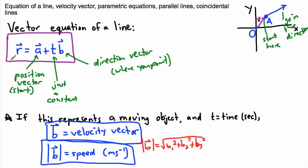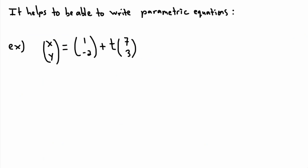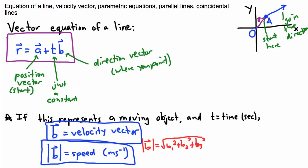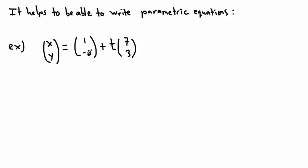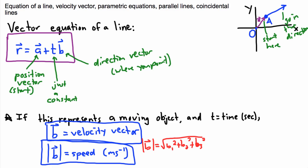That's really all there is. You just have to remember the vector equation of a line: r equals a plus tb. We can also rewrite it in component form, and it may even help to write things in parametric equations. This could be a vector equation of a line in x, y. I can say that x, y equals 1, negative 2 — that's your start point — plus t times the direction vector, just like we talked about.